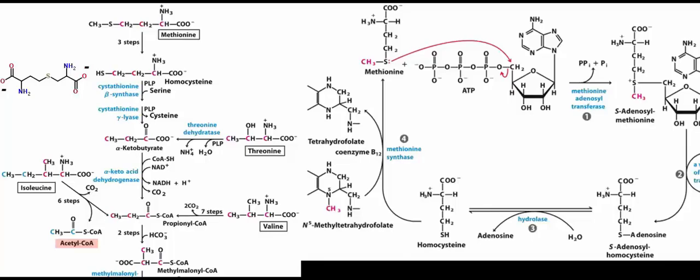Welcome back to the playlist on amino acid catabolism. In this video, we're going to talk about the degradation of methionine and threonine. The picture on the left shows a 'poof synthesis' for isoleucine on the left and valine on the right, six and seven steps respectively. We're going to cover the full catabolism of those branched-chain amino acids in separate videos. In this video, we'll only focus on methionine and threonine catabolism, starting with methionine.